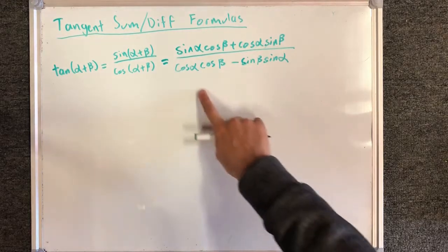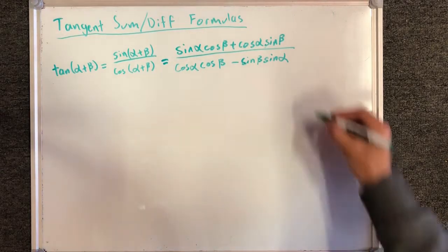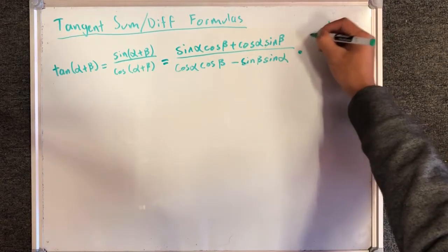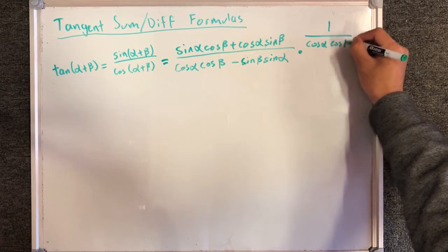Looking at this expression, I have sine alpha sine beta cosine alpha cosine beta. Let's multiply the top and bottom by 1 over cosine alpha cosine beta.